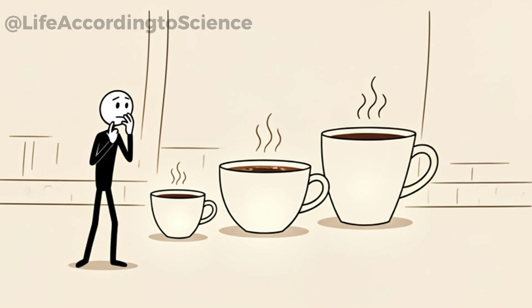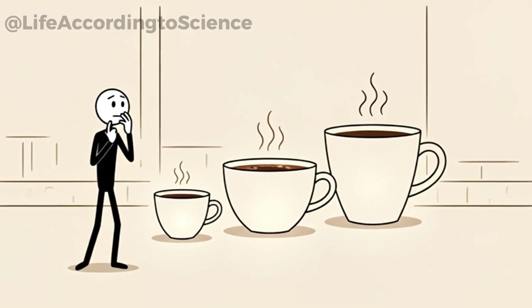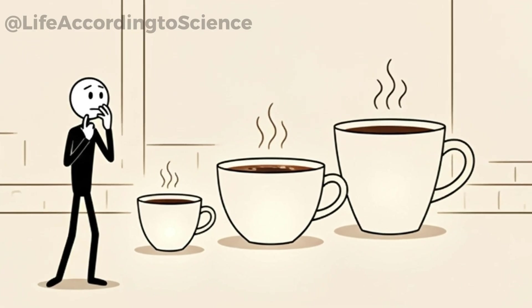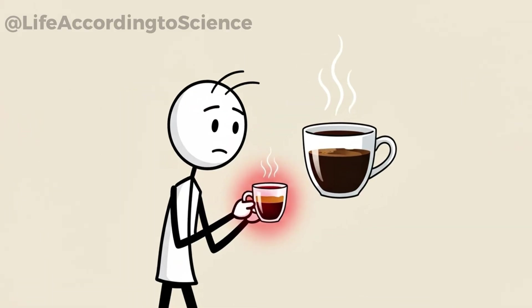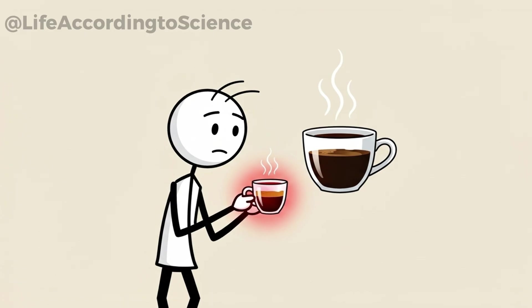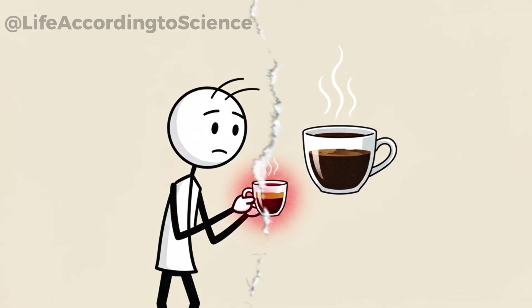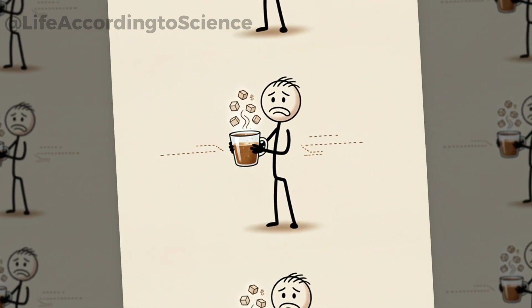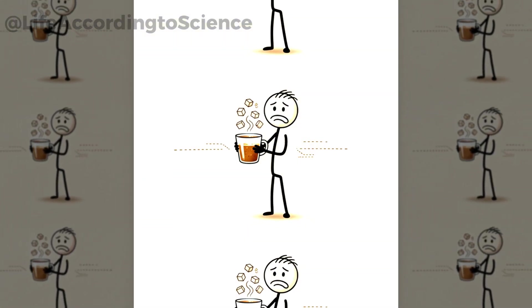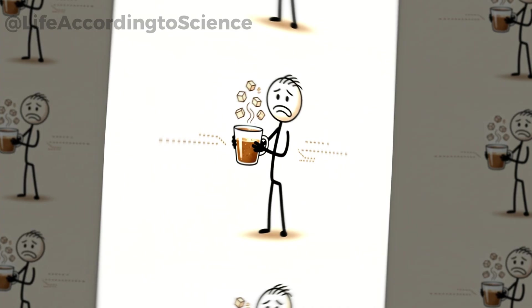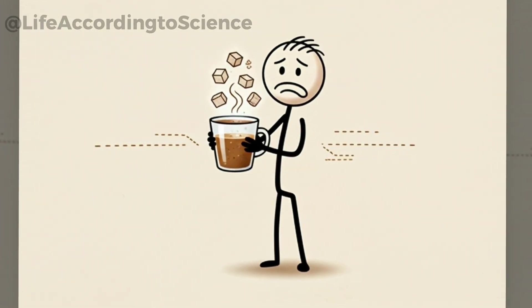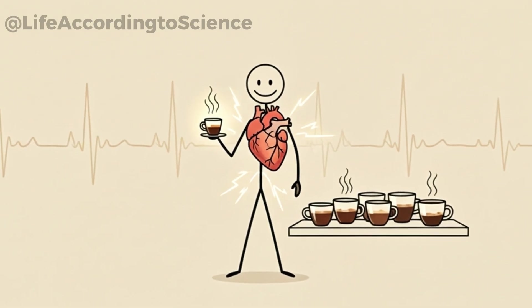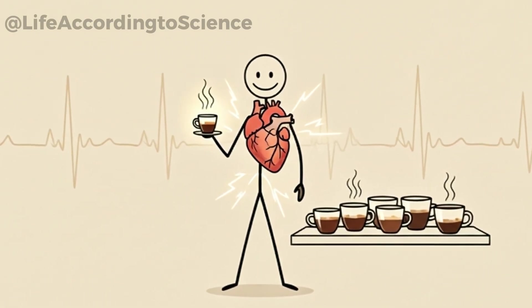Not all coffee is created equal. Espresso, for example, contains more caffeine per ounce, but is usually consumed in smaller amounts. Brewed coffee delivers a larger serving with a moderate caffeine level. Instant coffee often has the least caffeine, but additives can change the overall impact. If you're drinking five cups of espresso daily, the caffeine load will be significantly higher than five cups of brewed coffee. That means stronger effects on your nervous system and heart.